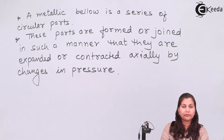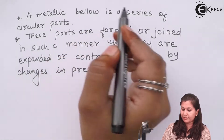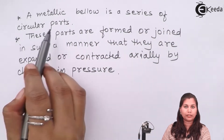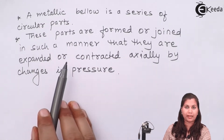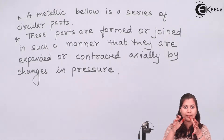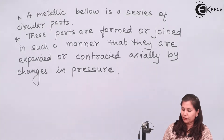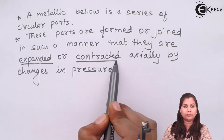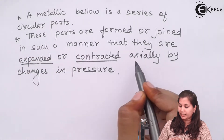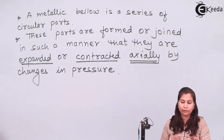Now comes the construction of the bellows. The bellows are a series of circular parts, and these circular parts are formed or joined in such a manner that they are going to expand or contract when the pressure is applied to them. When pressure is applied on the bellows they are going to expand, and when the pressure is released they are going to contract and come back to the earlier shape. The expansion and contraction of the moving parts or the circular parts is in the axial direction. Let's see the diagram of a bellows.